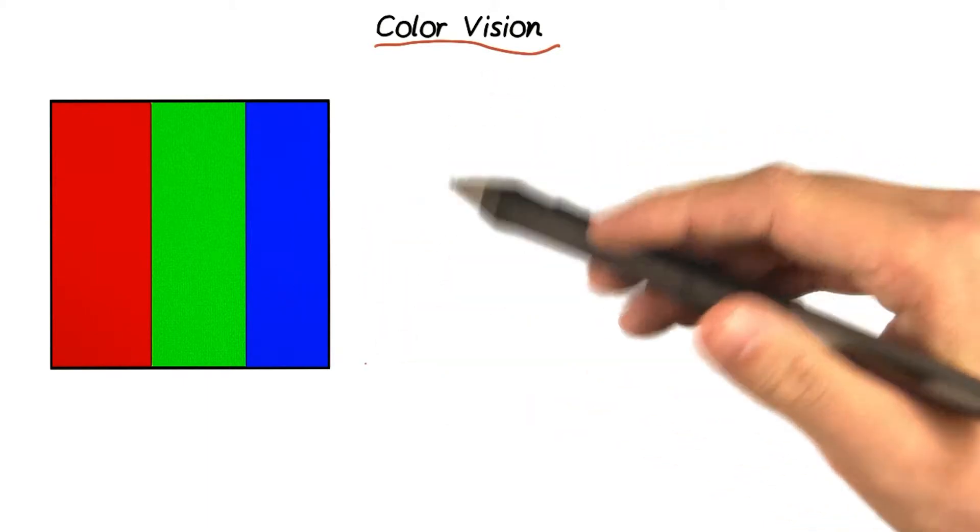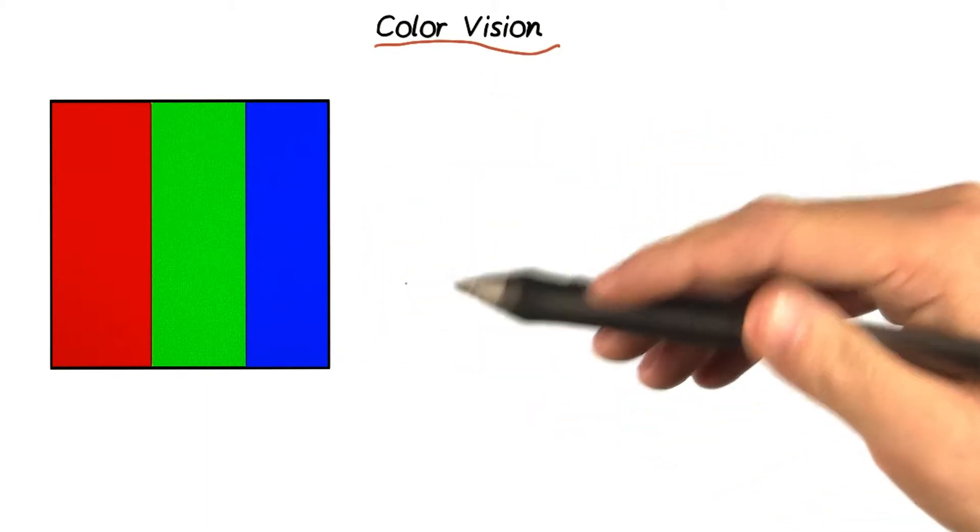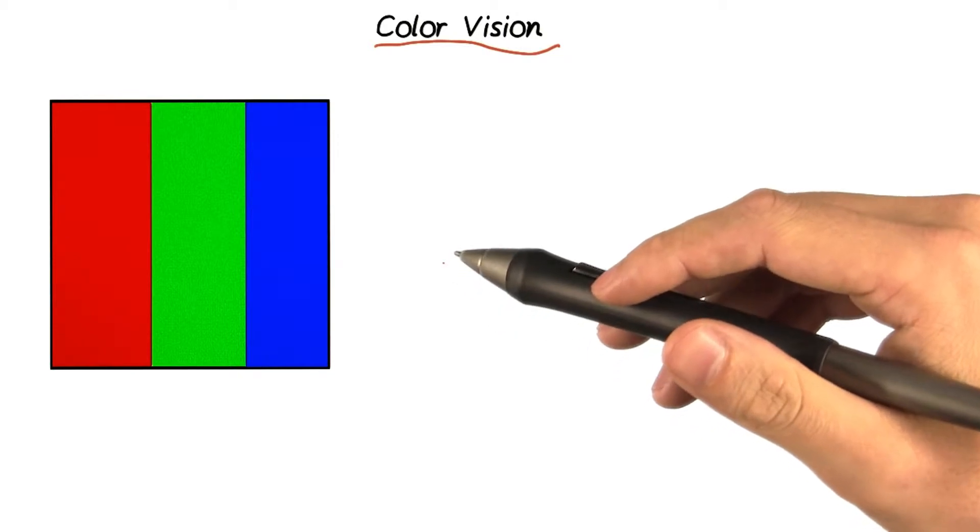And yet, when you take away the magnifying glass, the pixel can look like any color at all. Pretty weird, right?